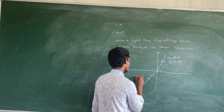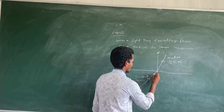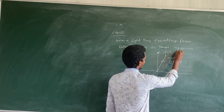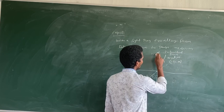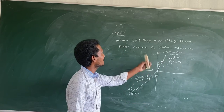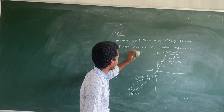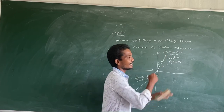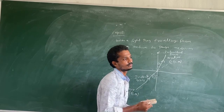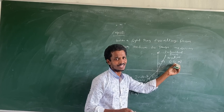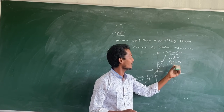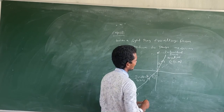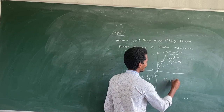This is the incident ray. The angle between the normal and the incident ray is called the angle of incidence. This is the refracted ray. The angle between the normal and the refracted ray is called the angle of refraction. In this condition, the refracted ray bends towards the normal, whereas in the previous condition the refracted ray bends away from the normal. In this condition, the angle of incidence is greater than the angle of refraction.